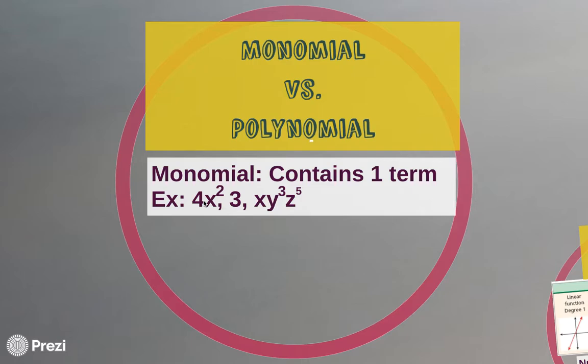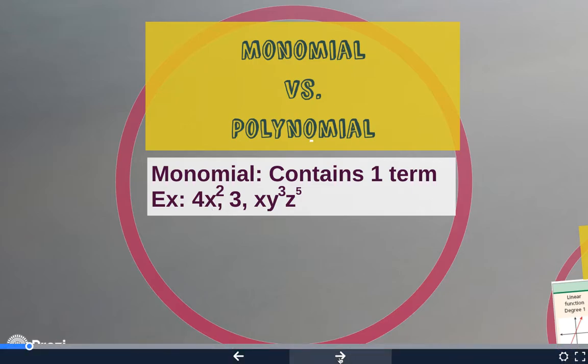Terms are separated by plus and minus signs, or addition and subtraction signs. Since all these are just one term, this 4x squared does not have an addition or subtraction, so it is a monomial. This 3 right here is not separated by any addition or subtraction symbol, so again, it's a monomial. And also, x times y to the third times z to the fifth — I don't see any addition or subtraction symbol, so this is also a monomial.